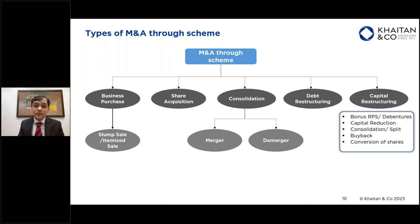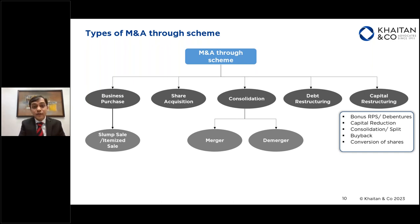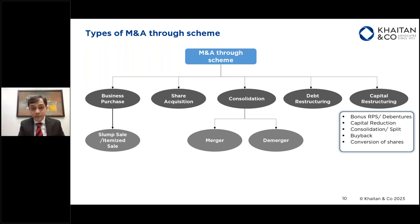Taking another example, share acquisition: we have also been part of schemes where we did a segregation of business from one entity into two entities, followed by a share swap as part of the scheme. Looking at other structures — take the example of bonus issuance of shares. Typically people assume a company can simply pass a board resolution and a shareholder resolution. However, certain kinds of bonus issuances — for example, bonus preference shares or bonus non-convertible debentures — can only be done through a scheme if there is any shareholder who is a non-resident.